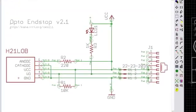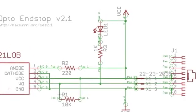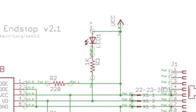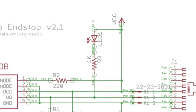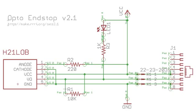Everything starts with a schematic. This is a schematic of an opto end stop designed by Zach Hoken. I won't get into the details of what this board does, but if we look at this schematic we see that, as an example, R3 — which is resistor 3 — leads into LED 1. Looking at this schematic things make sense. We see the electrical connections, we see the components, and we see how everything comes together.